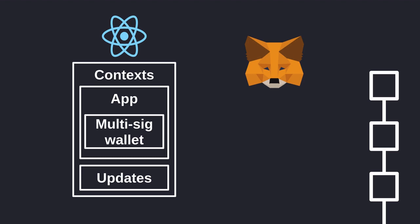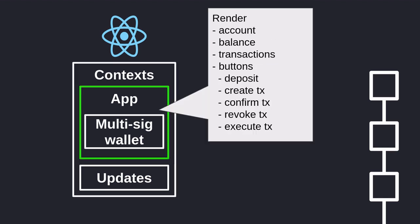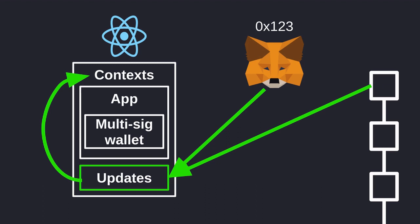This is how our React app will be structured. Inside context, we'll store the app states like web3, the current account, and the multisig wallet information such as the balance and the transactions. Inside the app component, we'll render the states from context — the current account, the balance of the multisig wallet — and some buttons to interact with the contract, including deposit, create transaction, confirm, revoke, and execute transaction. Lastly, we'll create a React component called Update, which will monitor changes made to MetaMask or to the blockchain, so that if either one changes, it updates the state stored in context.